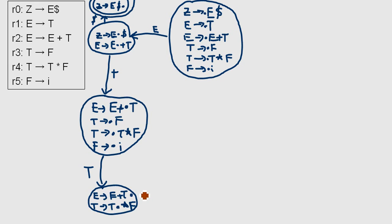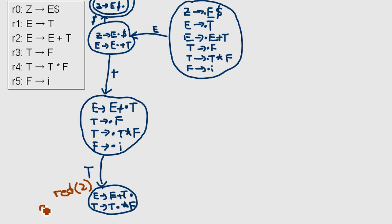When the pointer is at the end, we can reduce — we can replace E plus T with an E. We can reduce using rule number two. We also have to take into account that a shift could also be the case here, so we write reduce or shift. Afterwards, we have to manage that one state carefully.